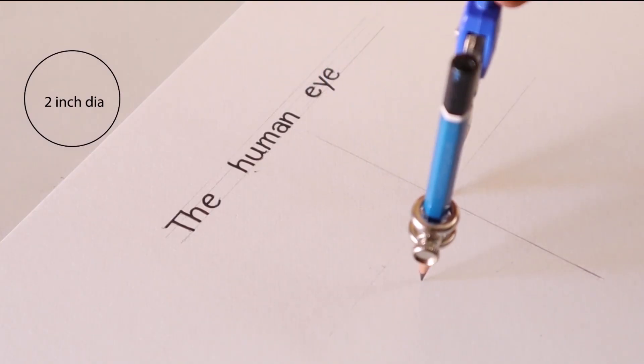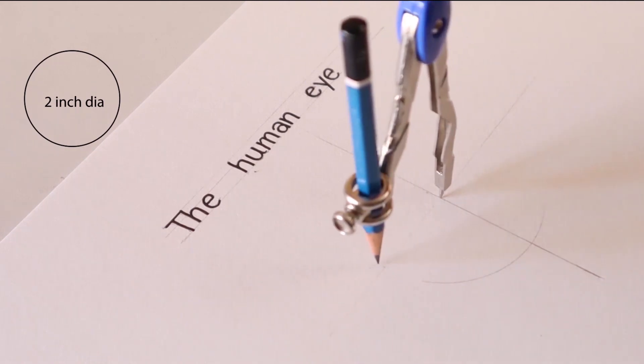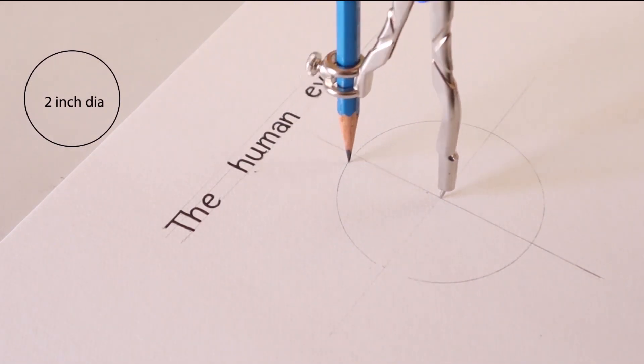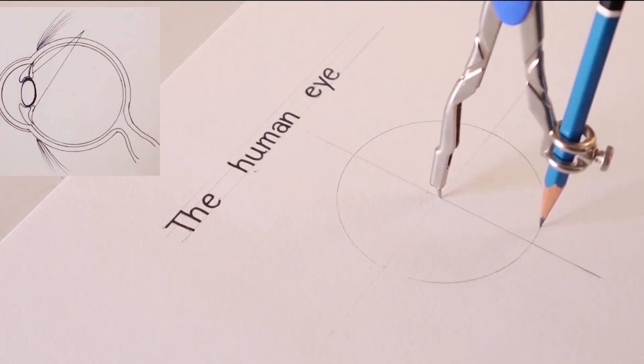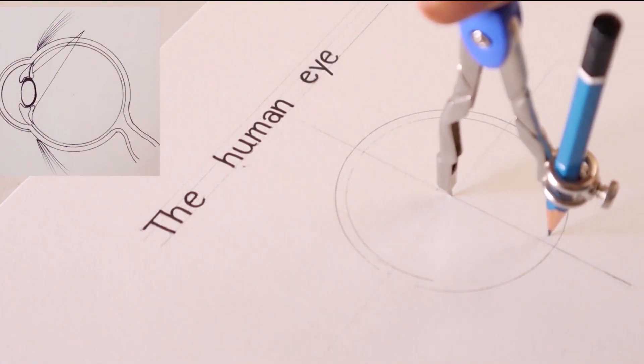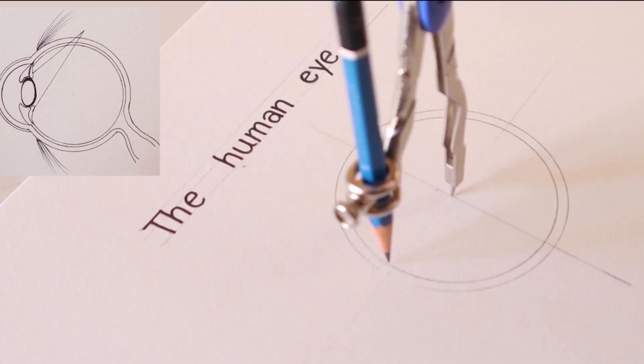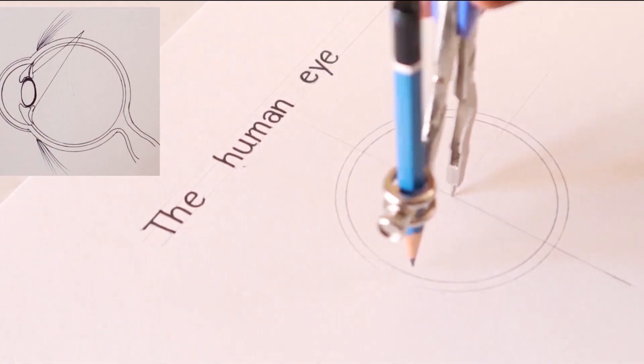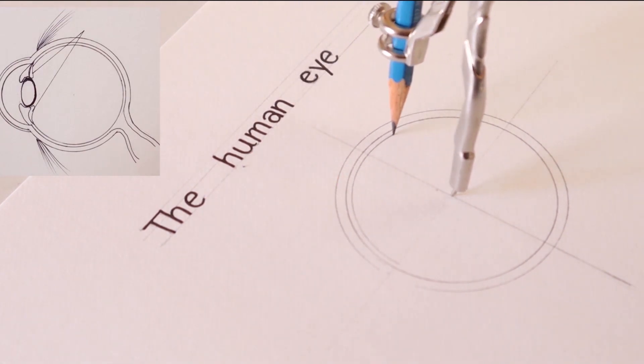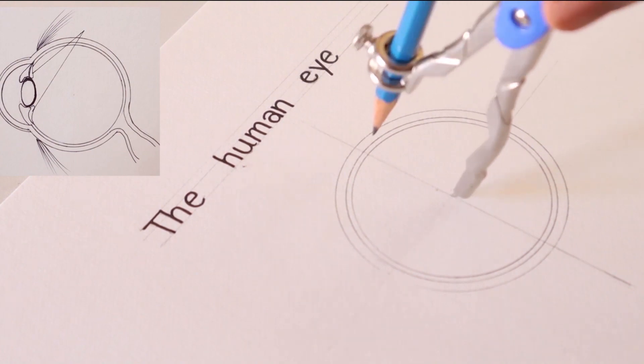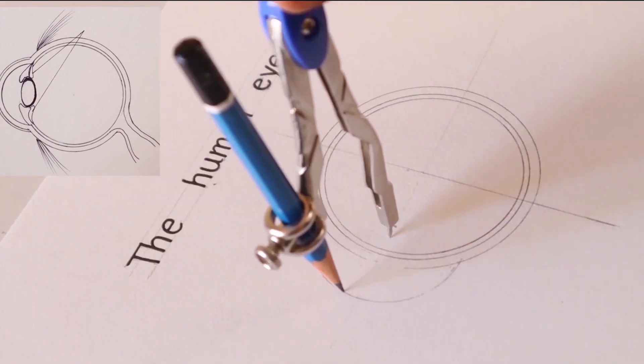So let's start drawing by making a plus shape. With the help of compass, we are drawing a circle which is the outer membrane of the eye. Here you can see the three membranes which protects the eye.